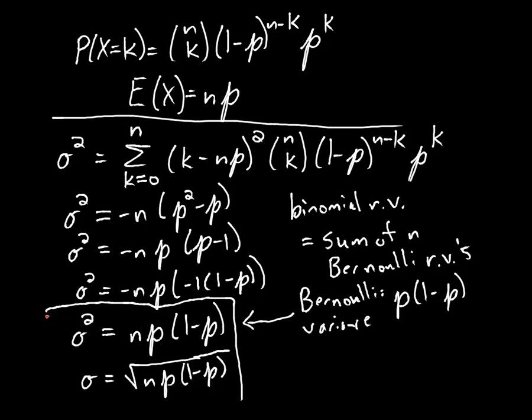So those are the variance and standard deviation for a binomial random variable.